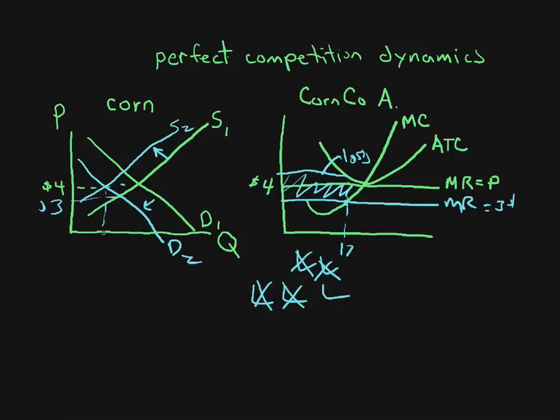And when these companies drop out, supply shifts to the left and output goes in this direction. Look what happens to price. Price comes back up. If this company stays around long enough, the price comes back up and it has zero economic profits.